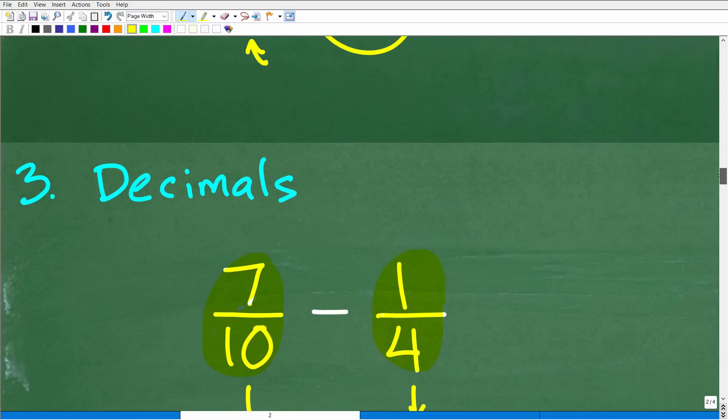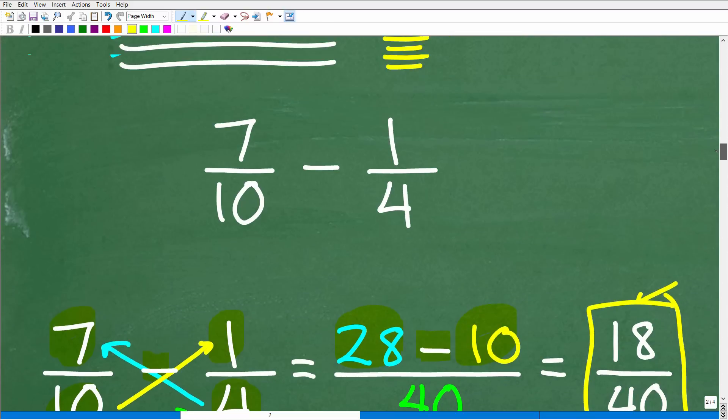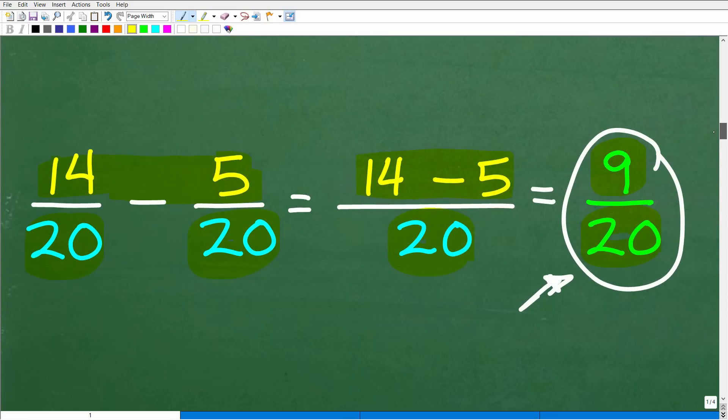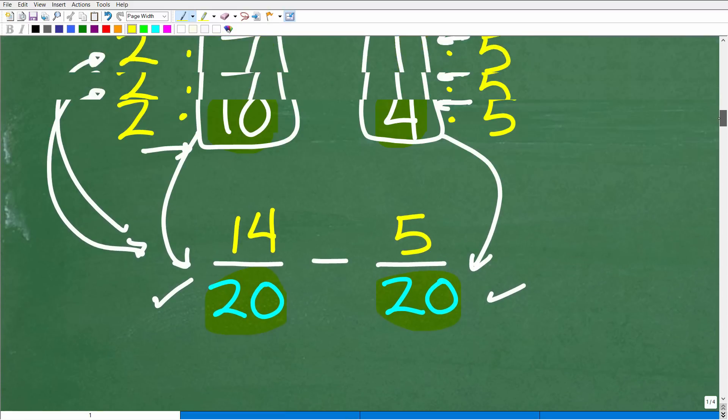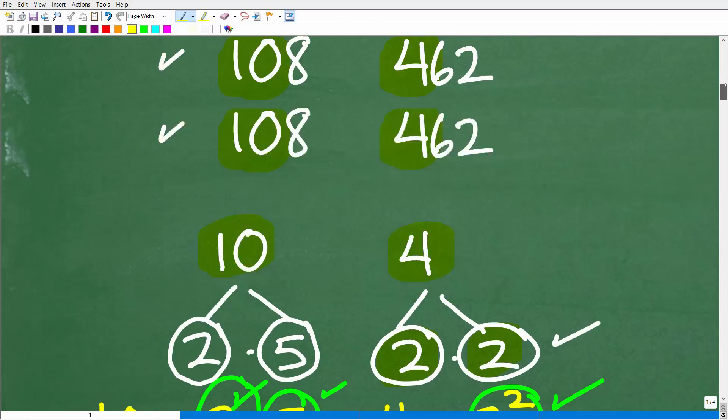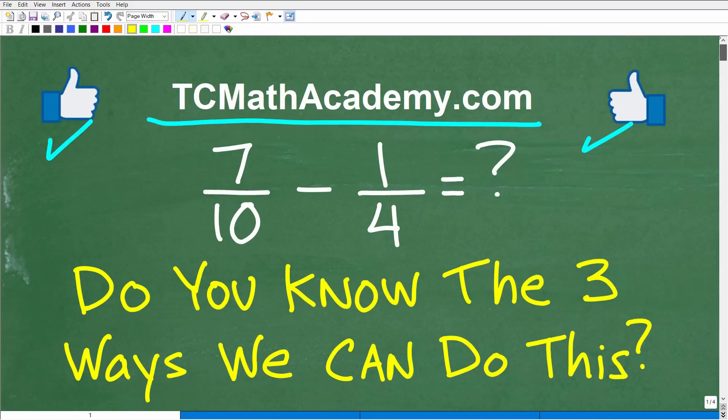So as I promised, there are three different ways you can approach this problem. It's good to know always. The main thing is, even though I show you these little shortcuts, you still need to know how to find the lowest common denominator. That is critical.